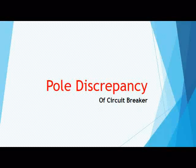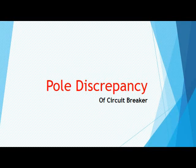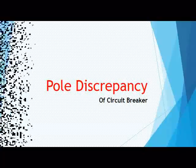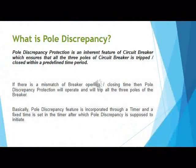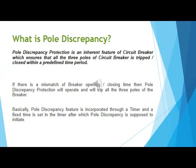Today our topic of discussion is pole discrepancy protection of circuit breakers. Pole discrepancy protection is an inherent feature of certain breakers which ensures that all three poles of the circuit breaker are tripped or closed within a predefined time period. If there is a mismatch in breaker opening or closing time, then pole discrepancy protection will operate and will trip all three poles. For example, if a trip command is issued but only two poles open and the third opens after more than the set time, pole discrepancy protection will operate and trip all three poles.